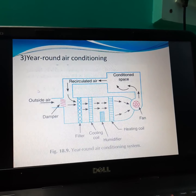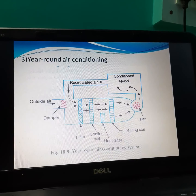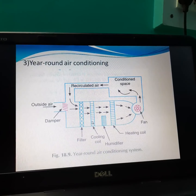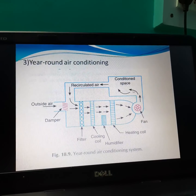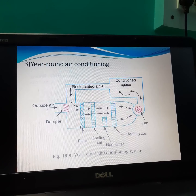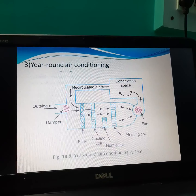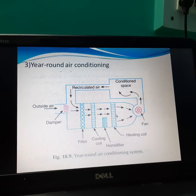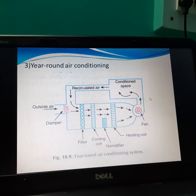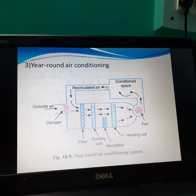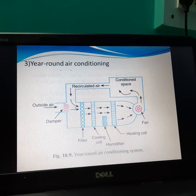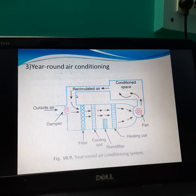This is the year-round air conditioning system — it is a combination of both winter and summer systems. All components are present here: damper, filter, cooling coil, humidifier, heating coil, and fan. The damper controls the volume of air; the filter purifies the air; the cooling coil cools the air; the humidifier performs humidification; the heating coil heats the air; and the fan is used for circulation. Conditioned air is supplied to the conditioned space, some air is recirculated, and some is taken from the atmosphere — this is the adiabatic mixing of the air streams.